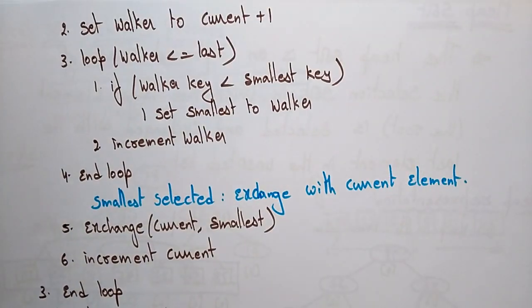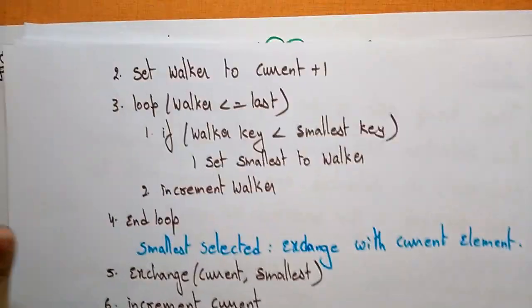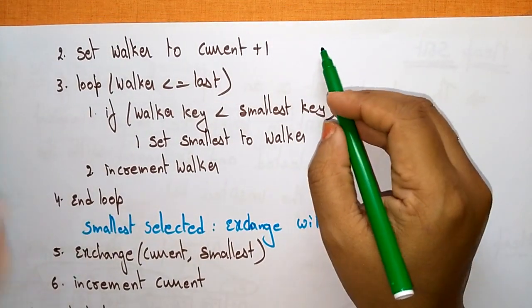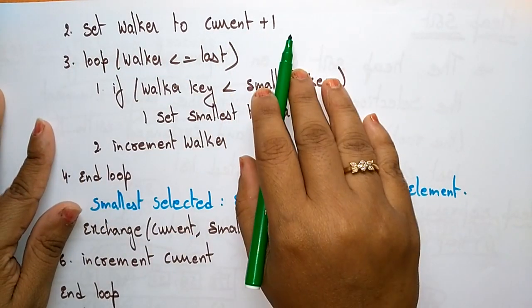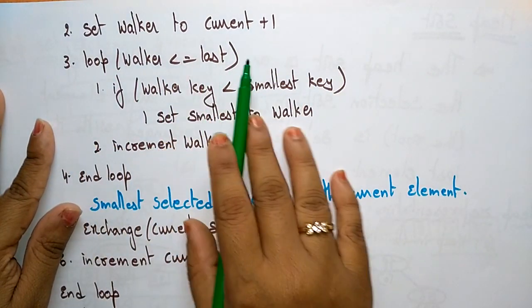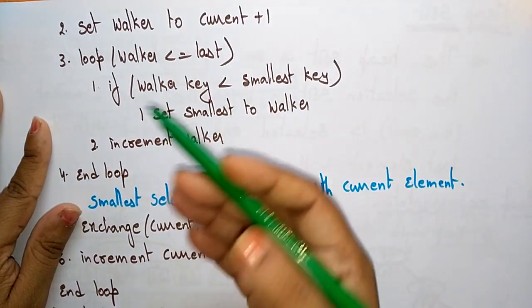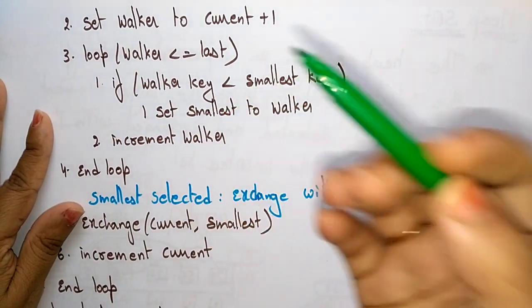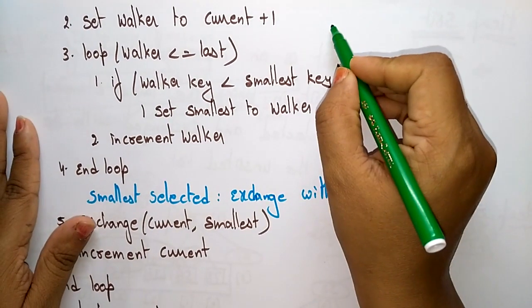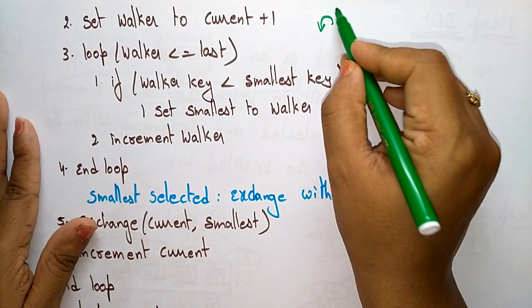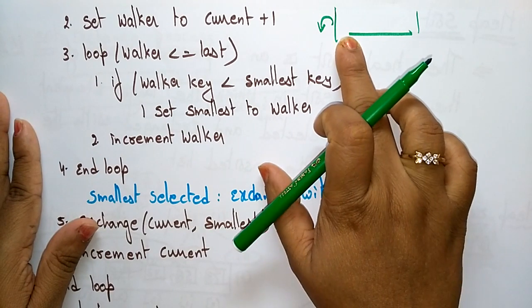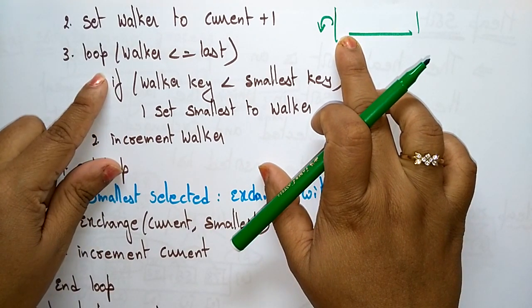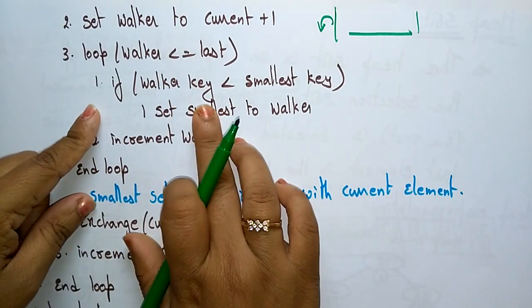Set walker to current plus one — you check from smallest to current plus one. The smallest is being assigned to the current. Set walker to current plus one. Loop: walker less than or equal to last element. The unsorted list starts at current plus one, so walker is less than or equal to last.